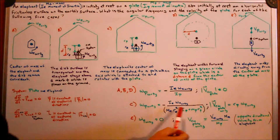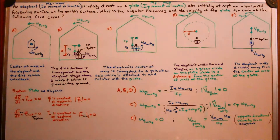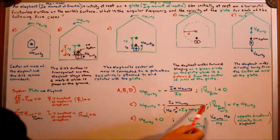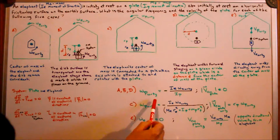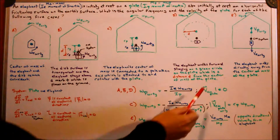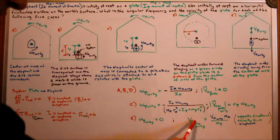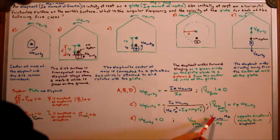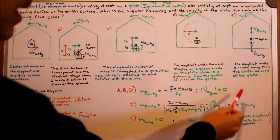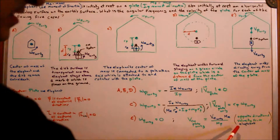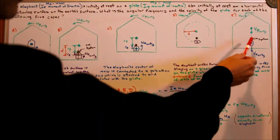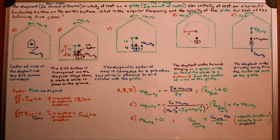That's the solution for C, and the magnitude of the center of mass velocity of the plate with respect to ground for case C is R sub P times that angular frequency quantity. For case E, there is no angular frequency of the plate with respect to ground, but the velocity of the plate with respect to ground equals the velocity of the elephant with respect to ground times the mass of the elephant divided by the mass of the plate, and this velocity is in the opposite direction of the velocity of the elephant.